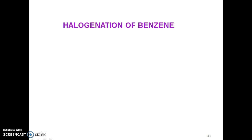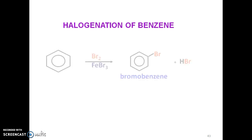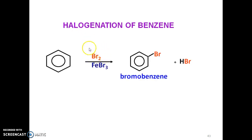So in halogenation of benzene, our reactant is benzene and our reagent is halogen. We can use Br2 or Cl2 with a Lewis acid as catalyst. If you use Br2, the catalyst is FeBr3. If you use Cl2, the catalyst can be AlCl3 or FeCl3.